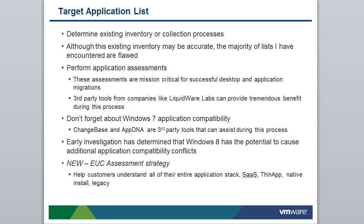There's a new EUC assessment strategy developing in which partners and consultants will help customers understand their entire application stack — SaaS, ThinApp, native install, and legacy — and where these applications will go. We're moving away from the idea that there's only one type of assessment, which is an application virtualization assessment. Customers want someone to hold their hand during this application migration, and this is where Horizon comes into play along with a number of other VMware initiatives.